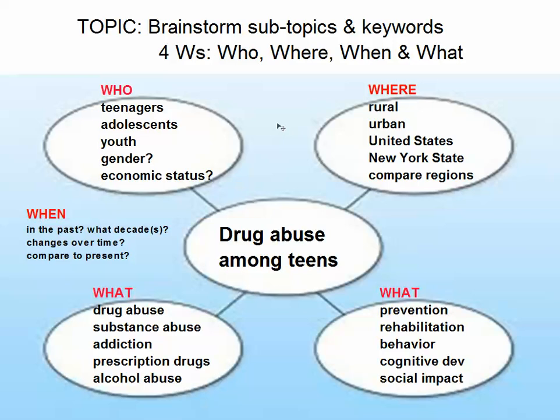One way to demonstrate this is using a visual tool called a mind map, which I've put on the screen. You can also just write your topic at the top of a blank piece of paper and start brainstorming. In the middle bubble here I have a sample topic: drug abuse among teens. Let's say I'm starting with this broad topic and want to narrow it down and figure out which aspects might be of interest to me. Using the four W's, I'd first ask: who's involved? The starting answer is teens — drug abuse among teens.